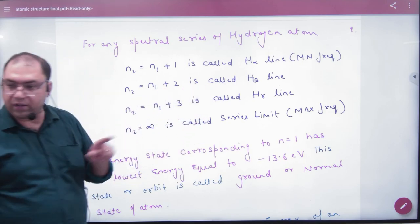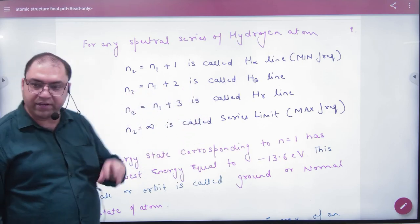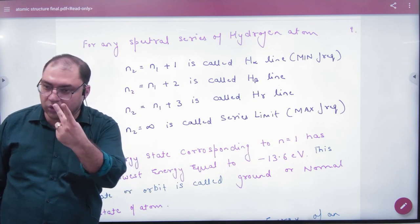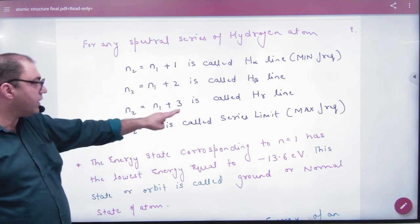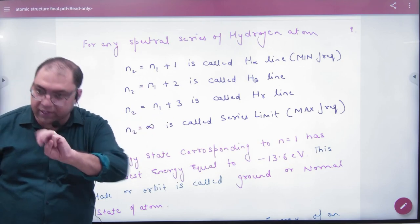In H-beta line, the transition is n equals 3 to n equals 1.